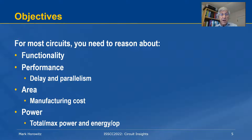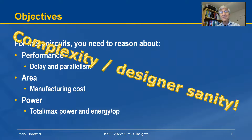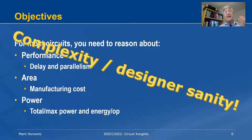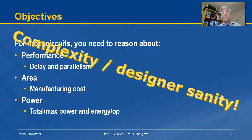We usually talk about those four different objectives — functionality, performance, area, and power. But in fact, the most important objective yet is not listed, and that is complexity, or what I like to call designer sanity. You only have a certain amount of brain juice, and you want to use it in a way that gives maximum return. So don't spend time optimizing things that don't matter very much. If you can use something simpler, go use it, because there will be enough tough problems that you can't get around.